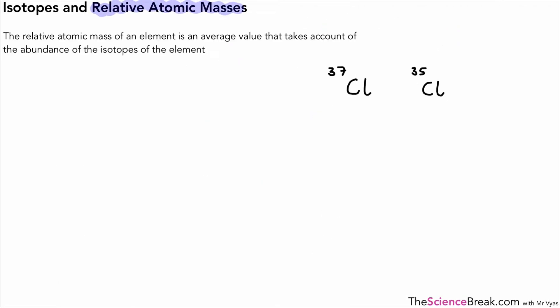Now we'll work out how relative atomic masses are calculated, given that different isotopes of elements are present in nature. The relative atomic mass of an element is an average value that takes into account the abundance of the isotopes of that element. So what does that mean?